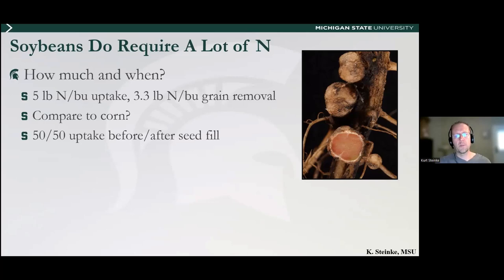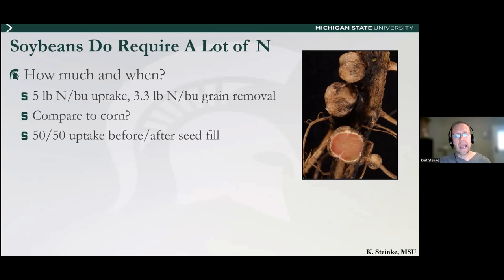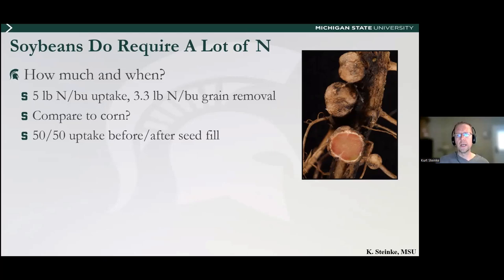When you compare that to corn, a 200-bushel corn crop will uptake and remove about 180 to 185 units of N. Soybean is above that threshold. An interesting fact: if you soil sample after harvest in a cornfield versus a soybean field, the cornfield will often have higher residual nitrate because corn is fertilized with nitrogen and doesn't take up as much as soybeans. About 50% of soybean N uptake occurs before the R4 growth stage — around late July to early August in Michigan — and 50% after.